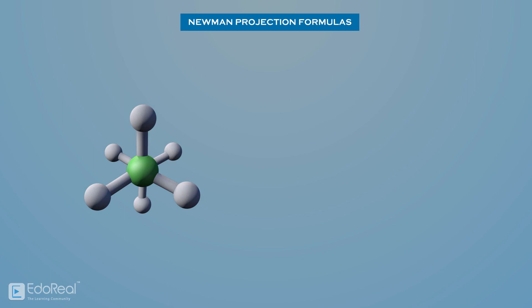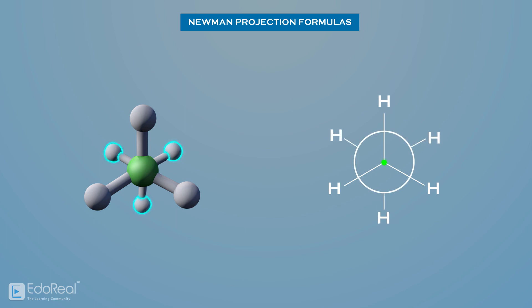According to the Newman projection, the front carbon is shown as a dot. The three atoms attached to this carbon are represented by three lines radiating from this point. The back carbon atom is shown as a circle. The three atoms connected to this carbon are represented by three lines radiating from the edge of the circle. The front carbon atom in the Newman projection is called proximal, while the back carbon atom is called distal. The Newman representation illustrates the specific dihedral angle between the proximal and distal atoms.